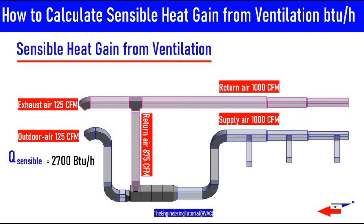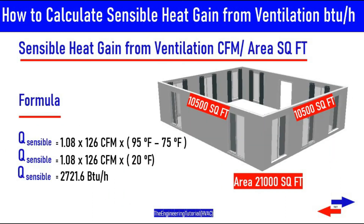The 2,700 BTUs per hour represents the heat gain from ventilation that must be cooled and dehumidified before delivery to the space. Importantly, this is a coil load, not a space load. All sensible loads can be a coil load, but not all coil loads are sensible space loads. The cooling of ventilation outdoor air is a coil load, not a sensible space load.